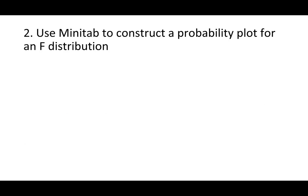The second learning objective is to use Minitab to construct a probability plot for an F distribution. When we compared two means, we used a T distribution. For two proportions, we used a Z distribution. Now, when conducting an ANOVA, we're going to use an F distribution. Like the T distribution, the F distribution varies depending on degrees of freedom. The degrees of freedom are separated into degrees of freedom between groups and degrees of freedom error, or degrees of freedom within groups.